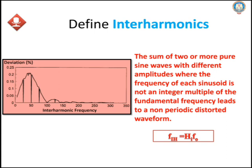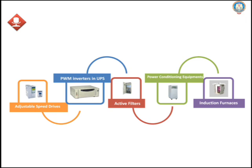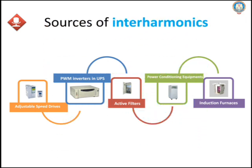The sum of two or more pure sine waves with different amplitudes, where the frequency of each sinusoid is not an integral multiple of the fundamental frequency, will lead to a non-periodic distorted waveform. What are the sources of inter-harmonics? The sources of inter-harmonics are adjustable speed drives, PWM inverters, active filters, power-conditioning equipment, and induction furnaces.